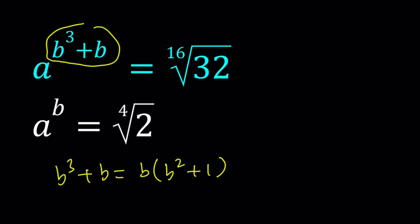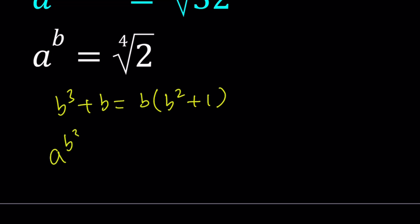First of all, let's go ahead and start with the first one and write this as a to the power b times b squared plus 1. And then now this can be turned into a to the power b to the power b squared plus 1.